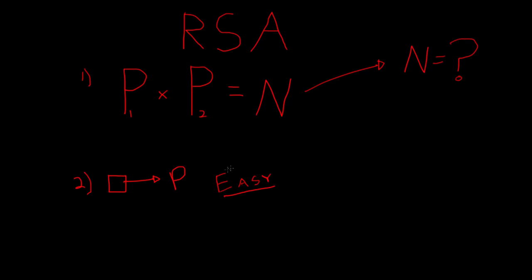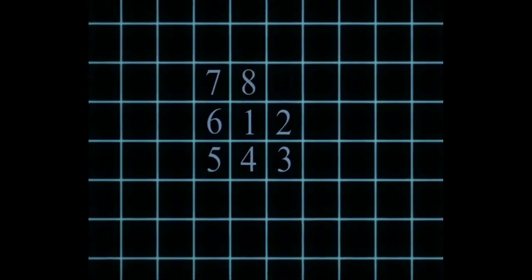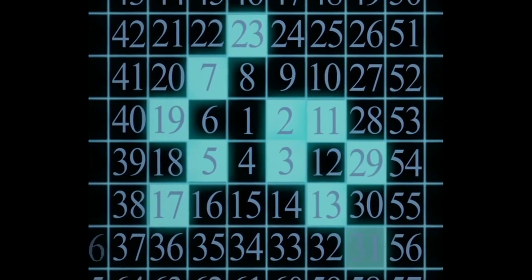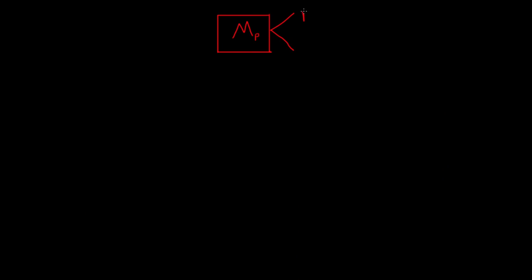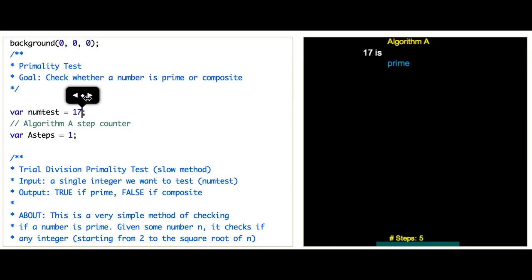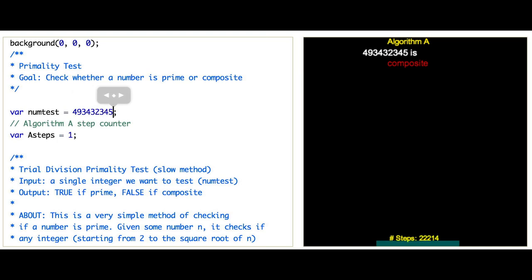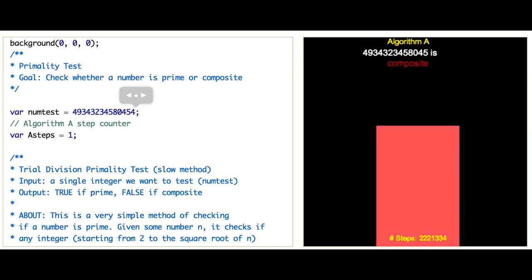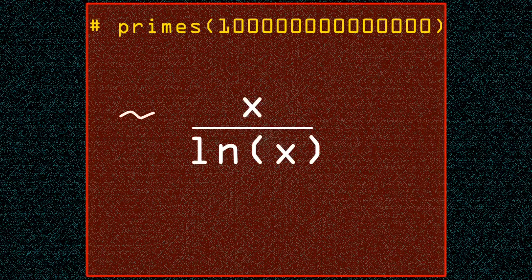Let's return to the first problem: the difficulty of prime factorization. What is it about prime factorization, or prime numbers themselves, which makes problems hard? To find out, we began with the core problem: given X, is X prime or composite? This is a primality test. We ended up building some solutions, and in doing so we realized this problem was computationally expensive — there was no instant solution. As our input number grew, so did the number of steps. We can actually predict this search space using the prime number theorem.